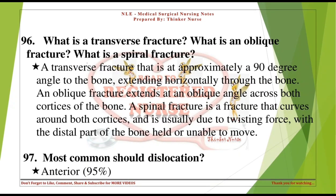What is a transverse fracture? What is an oblique fracture? What is a spiral fracture? A transverse fracture is at approximately a 90-degree angle to the bone, extending horizontally through the bone. An oblique fracture extends at an oblique angle across both cortices. A spiral fracture curves around both cortices and is usually due to twisting force, with the distal part of the bone held or unable to move.